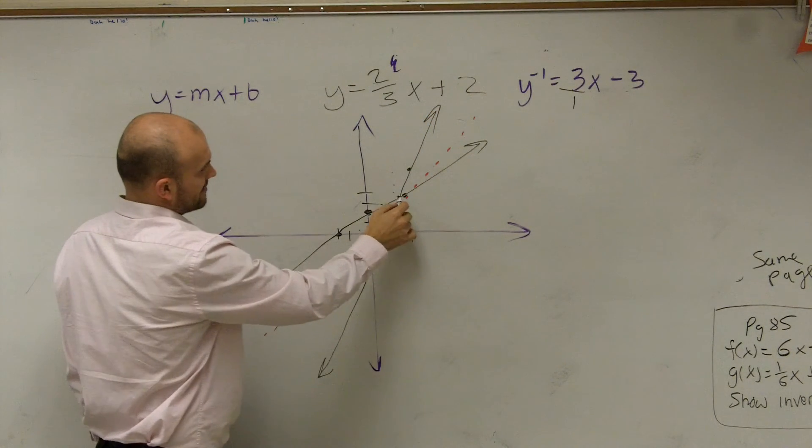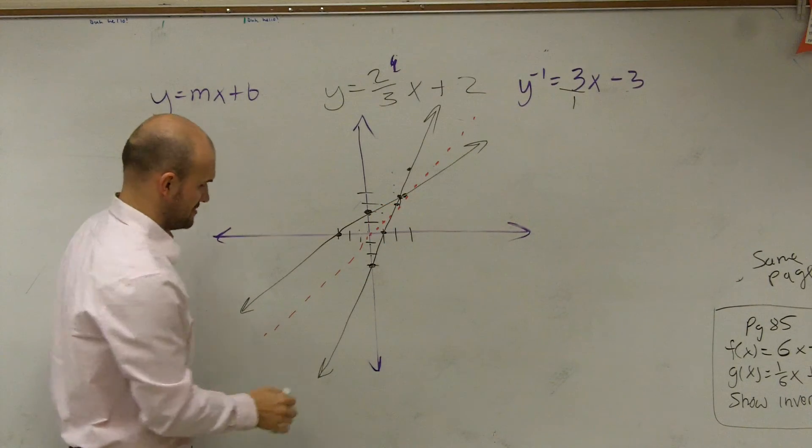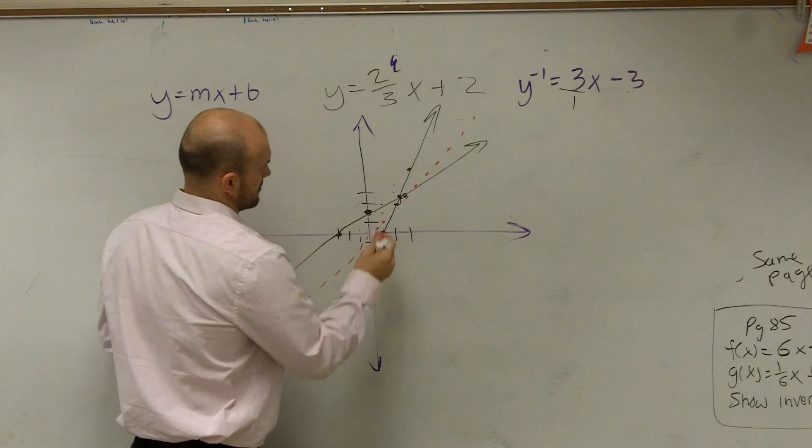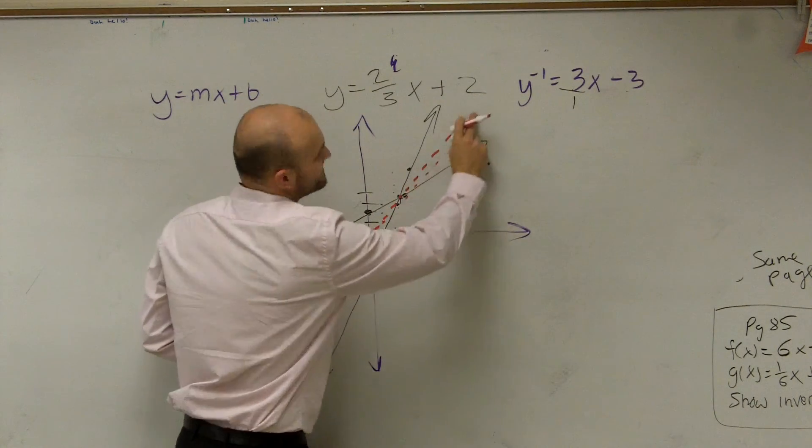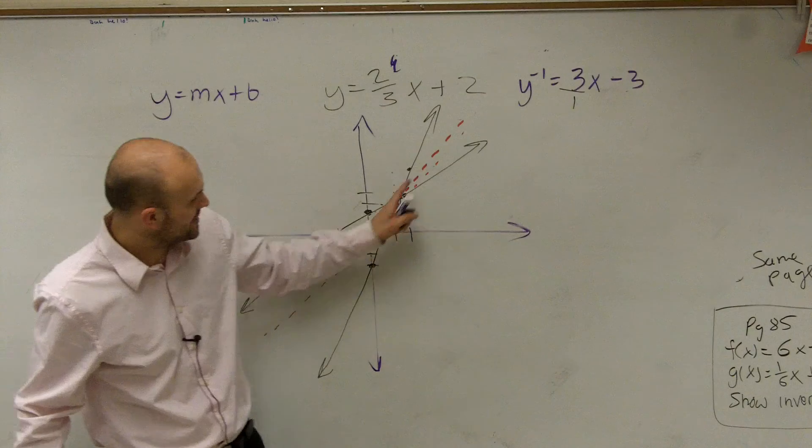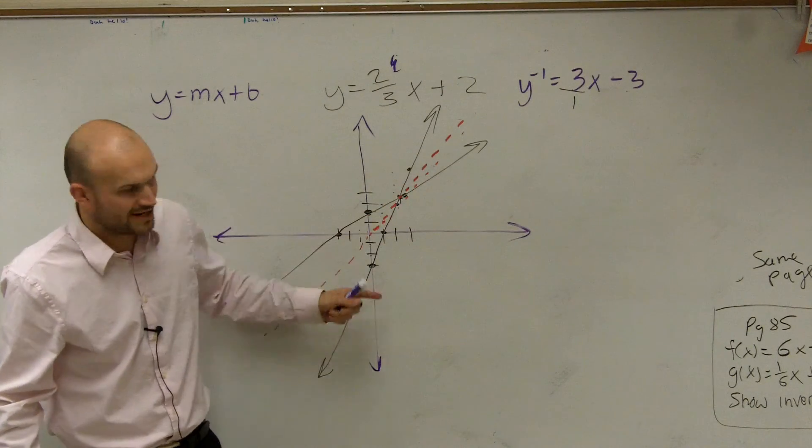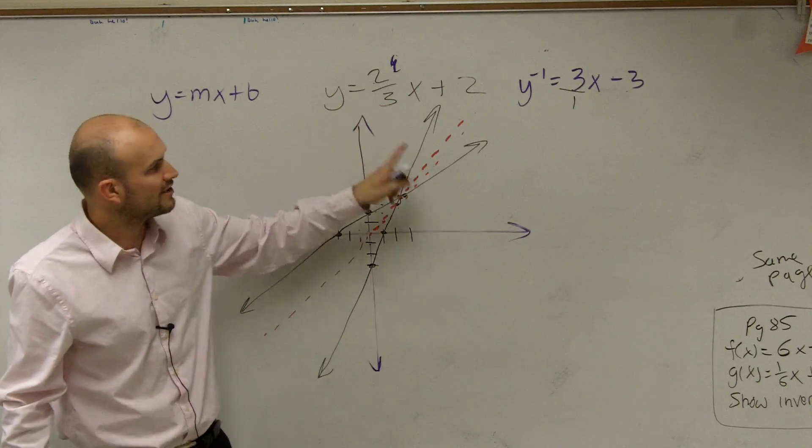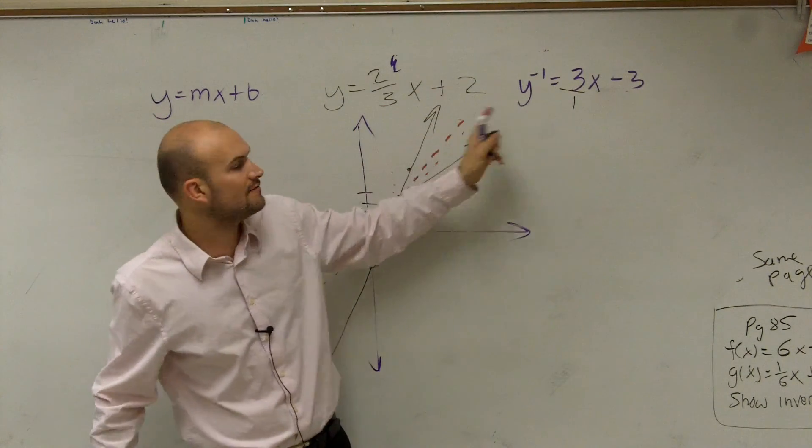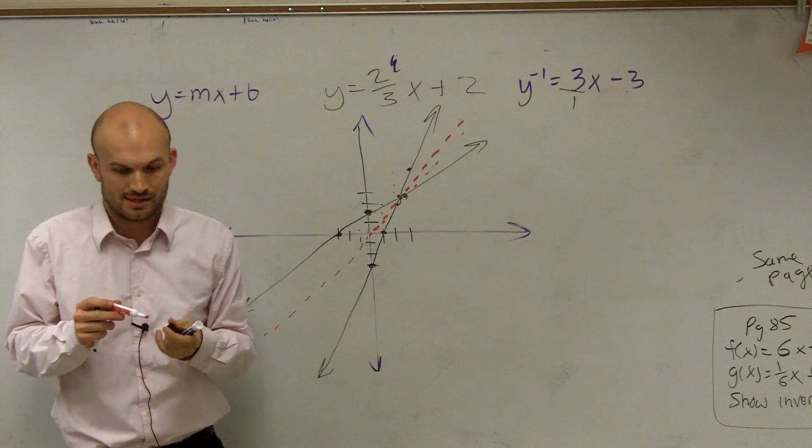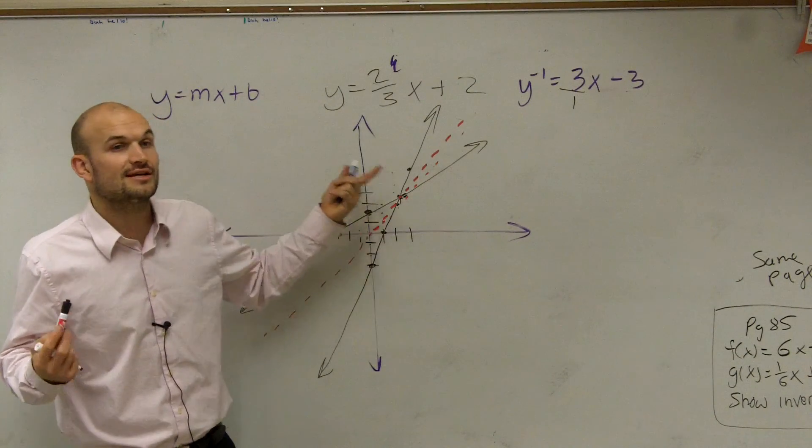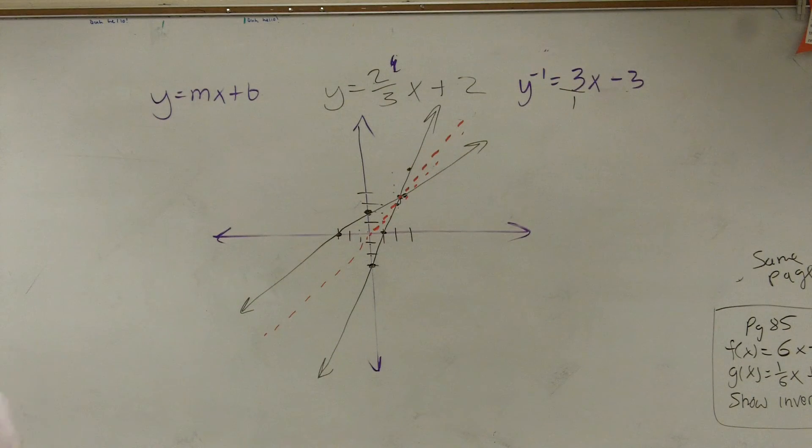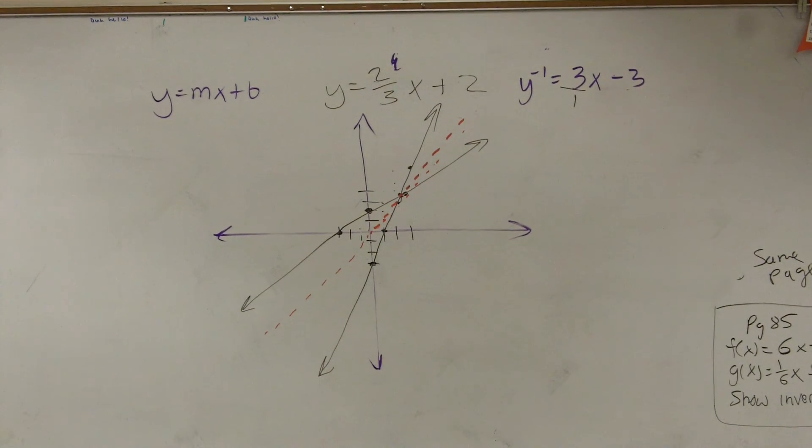And obviously, this point should be on the dotted line, but my graphs are not the best in the world. So you guys can see, hopefully, that it's going to reflect about there. Obviously, where they intersect is going to be on the reflection line. Therefore, when graphing this and my inverse, you can see that they're reflected over the y equals x line. All right? So all you guys got to do for this is just find the inverse.